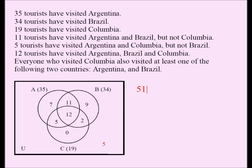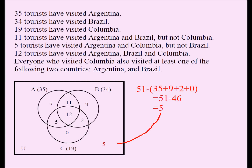So: 51 minus 46 equals 5. The four Argentina regions (7+5+12+11) sum to 35, then adding 9, 2, and 0 gives 46 total inside the diagram. 51 minus 46 equals 5, which is the number of tourists who visited none of the three countries.